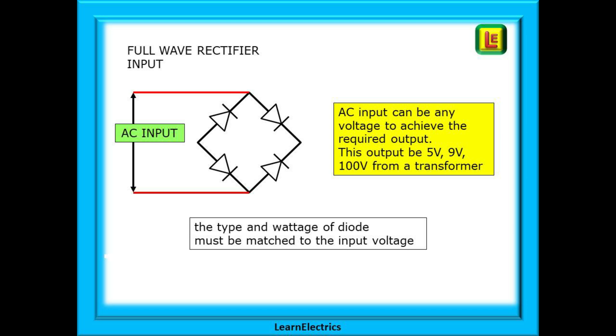The output can be 5 volts, 9 volts, 100 volts or whatever from a transformer and the type and wattage of diode must be matched to the secondary voltage and the current.